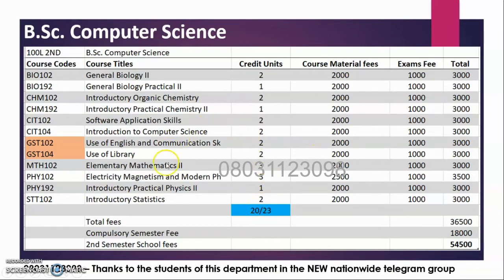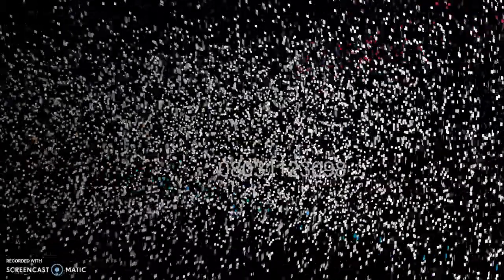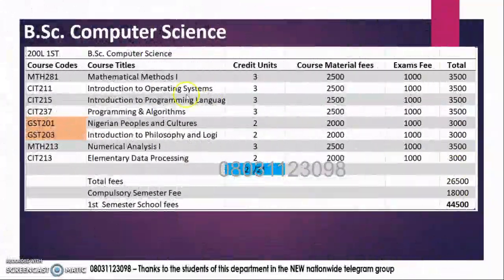You carry all of these courses. If you failed — meaning you passed all of them except two, let's say two courses: Statistics 102 which is two units and Physics 192 which is one unit — you still have made your 20 credit units for this semester. You have made it. This is your fee, so we proceed to the next semester which is 200 level first semester.